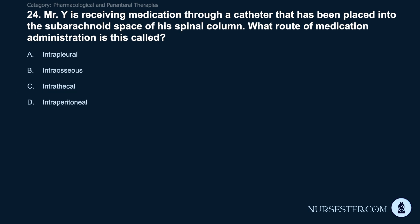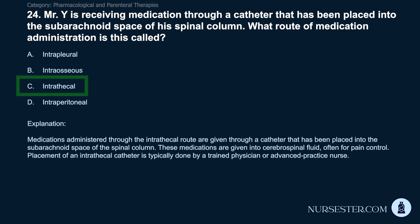Question 24: Mr. Y is receiving medication through a catheter placed into the subarachnoid space of his spinal column. What route of medication administration is this? Correct answer: C. Intrathecal. Medications administered through the intrathecal route are given through a catheter placed into the subarachnoid space of the spinal column. These medications are given into cerebrospinal fluid, often for pain control. Placement is typically done by a trained physician or advanced practice nurse.